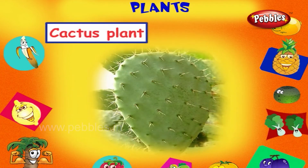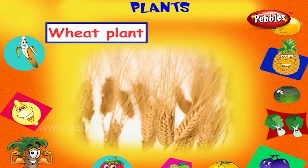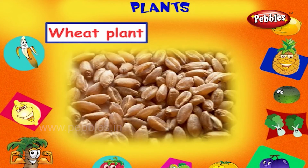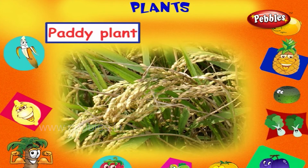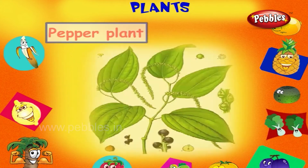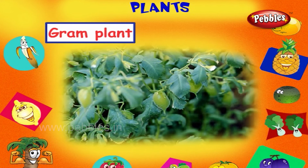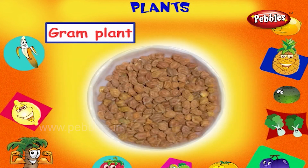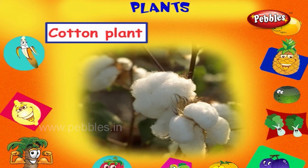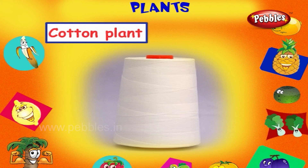This is a cactus plant, it grows in the deserts. This is a wheat plant, it gives us wheat grains. This is a paddy plant, it gives us rice. This is a pepper plant, it gives black pepper. This is a gram plant, it gives gram. This is a cotton plant, it gives us cotton fiber from which thread is made.